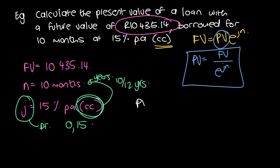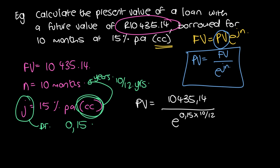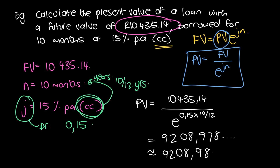So PV equals 10,435.14 divided by e^(0.15 × 10/12). Entering this into a scientific calculator gives 9208.978..., which we round to $9208.98.